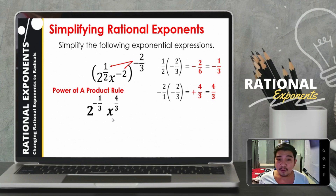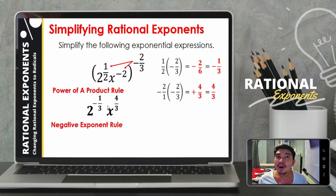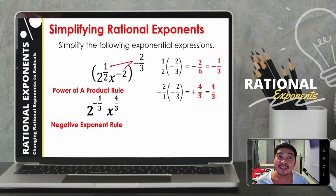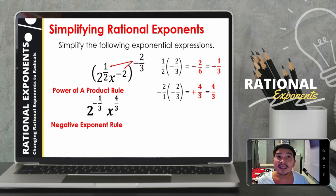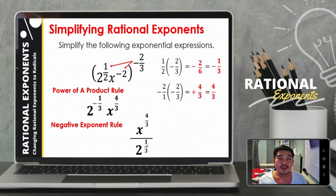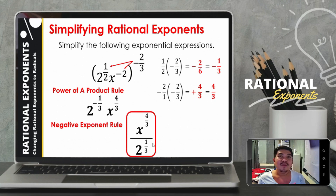When we have a negative exponent, the expression is not yet in its simplest form. We need to apply the negative exponent rule: get the reciprocal of the expression with the negative exponent and change the exponent to positive. Only 2 raised to negative 1 third has a negative exponent, so we copy x raised to 4 thirds, then move 2 to the denominator with a positive exponent of 1 third. This is our final answer.